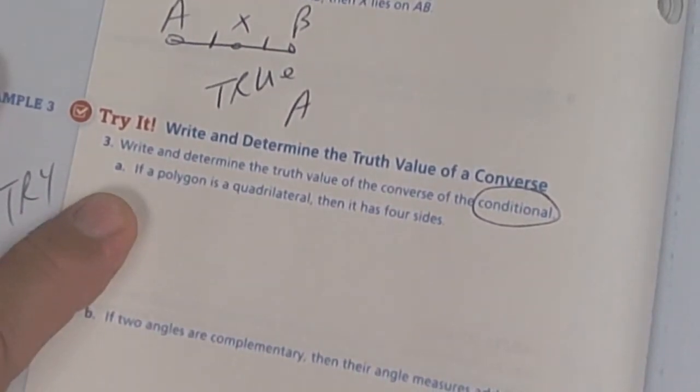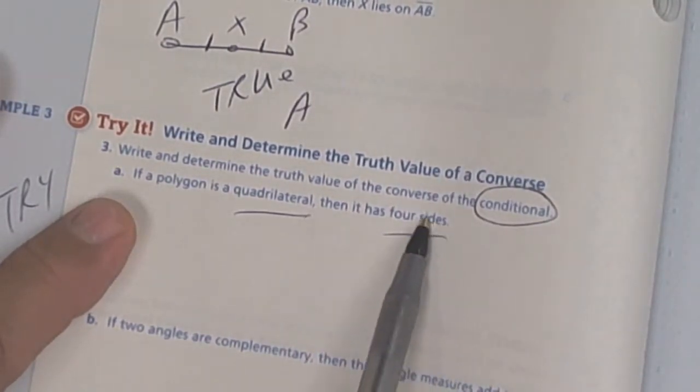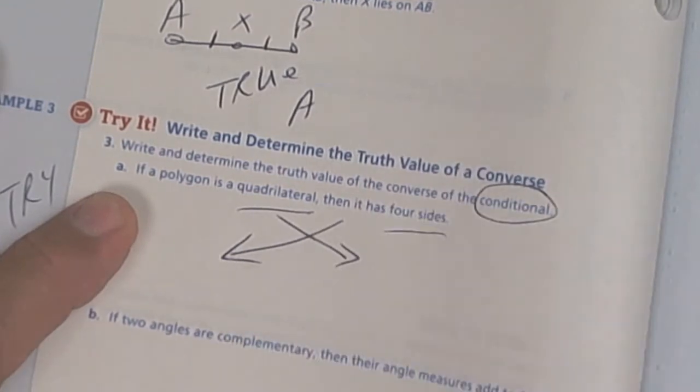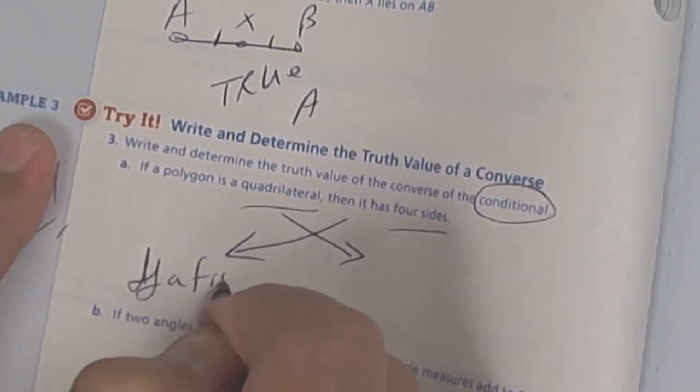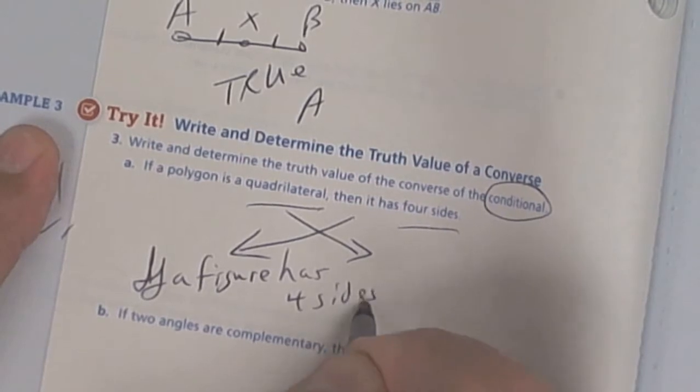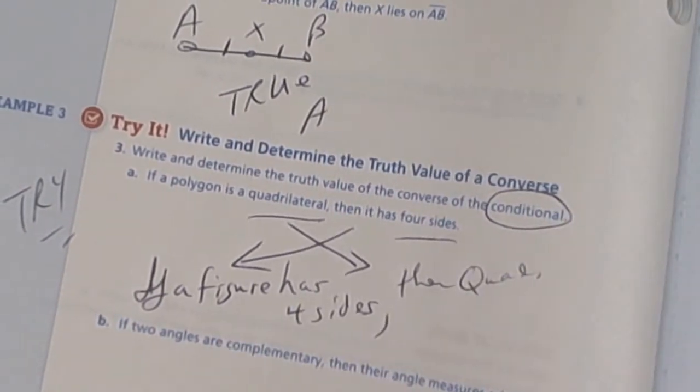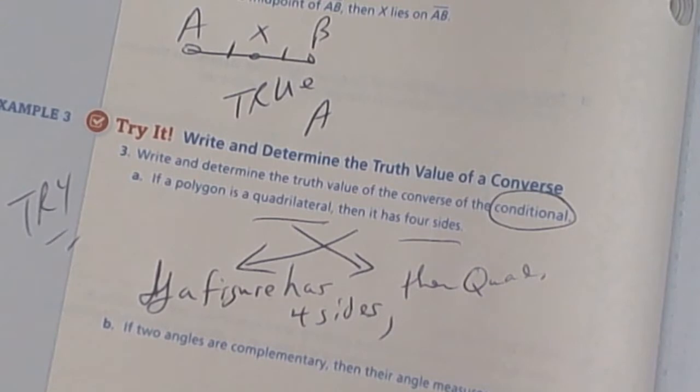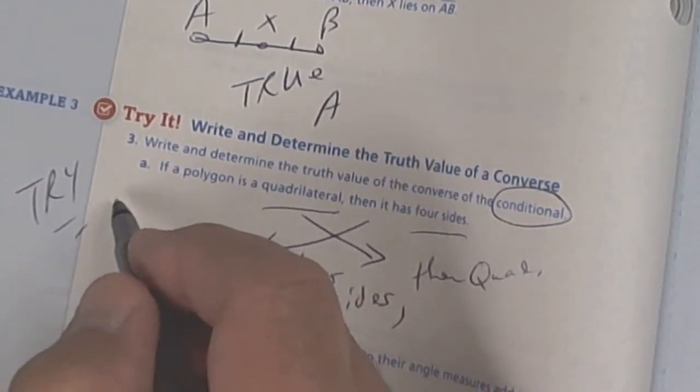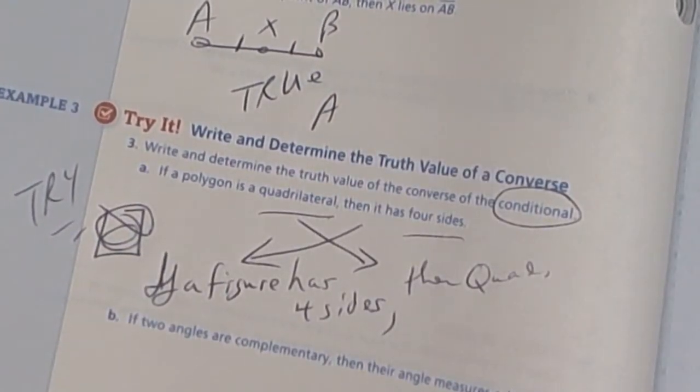So if a polygon is a quadrilateral then it has four sides. That's true. A quadrilateral has a four-sided figure. But they want you to write, let's see, write and determine the truth value of the converse. So they want you to switch this and then determine if it's true. So if a figure has four sides then it is a quadrilateral. Now is that true? Well if it has four sides it would be a quadrilateral. Now you might say well what if it's not open, like here, here, here, here. We're not going to go there. If it has four sides it is a quadrilateral. Okay, that's what we're doing there.